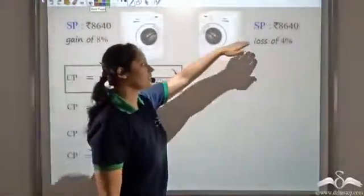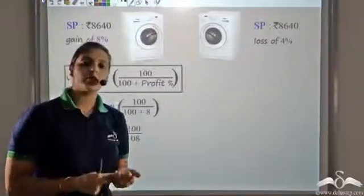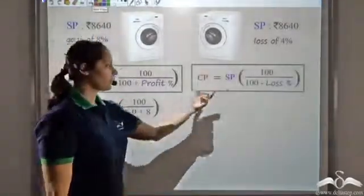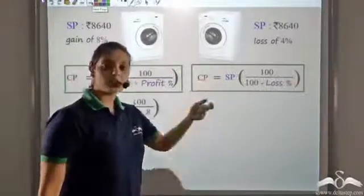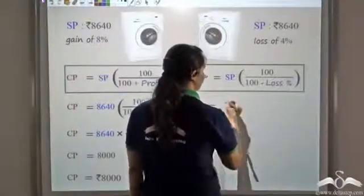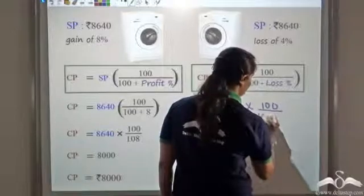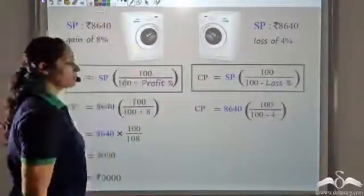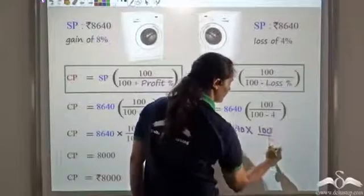Now let's look at the second washing machine. The selling price is ₹8640 and there is a loss of 4 percent. When we know the selling price and the loss percent, we can find the cost price. The cost price in this case is: selling price into 100 upon 100 minus loss percent. Substituting values, selling price is 8640 and loss is 4 percent, giving us 8640 times 100 divided by 96.